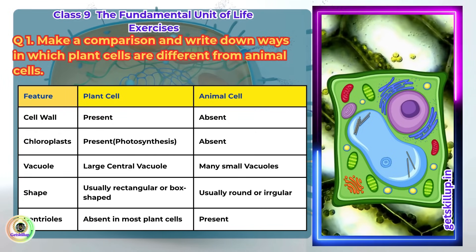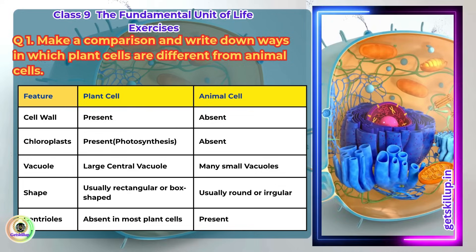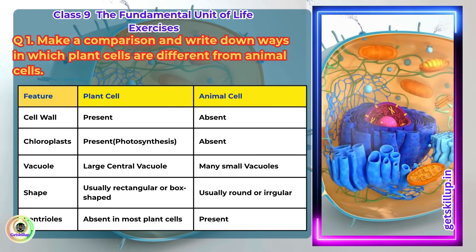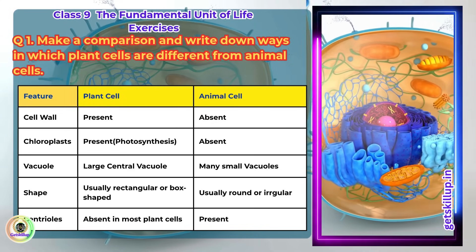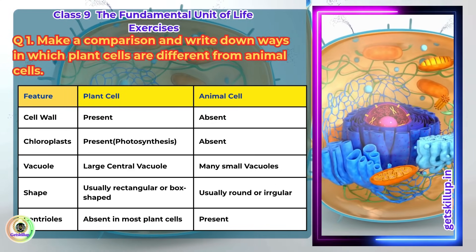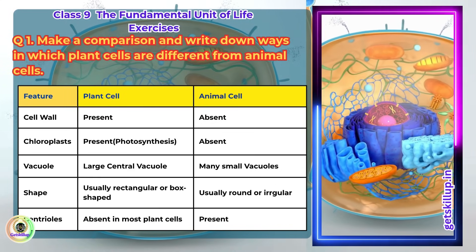Features of animal cell: Cell wall is absent. Chloroplasts is absent. Many small vacuoles. Shape is usually round or irregular. Centrioles is present.